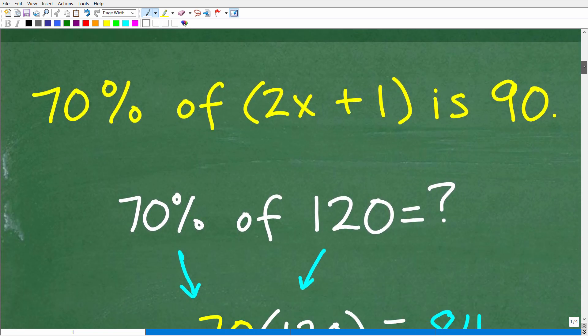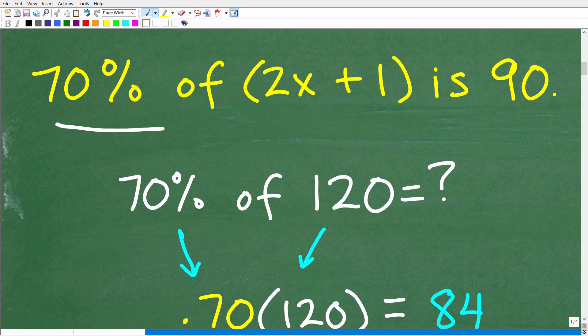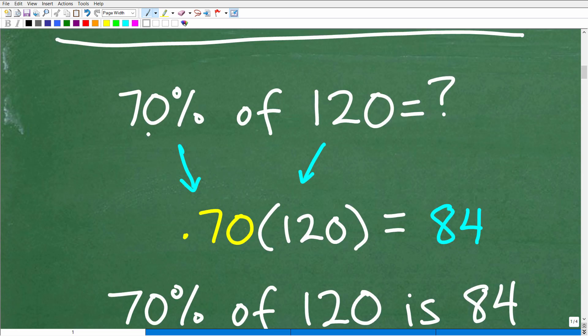So 70% of 2x plus 1 is 90. Well, in order to do this problem, let's take a look at a more basic version of a percent problem. And we'll get back to our actual problem here. But let's take a look at this problem. What if we have 70% of 120? Let's make sure you know how to do this problem first. Because if we can't do this, well, you're going to struggle with our original problem.